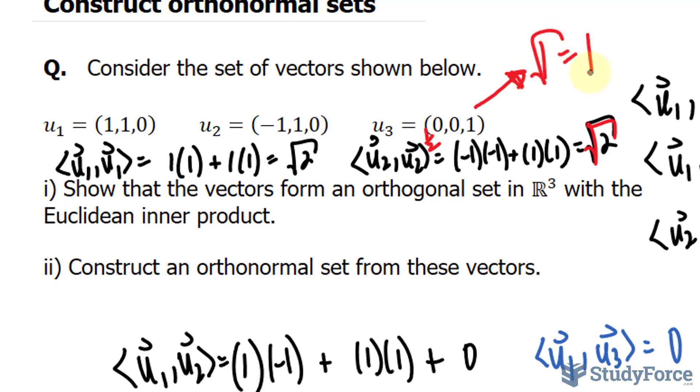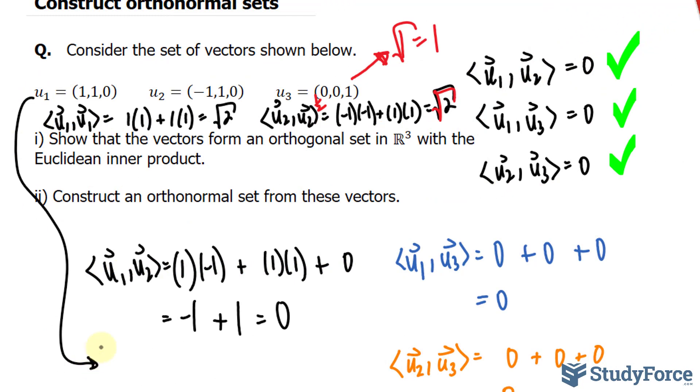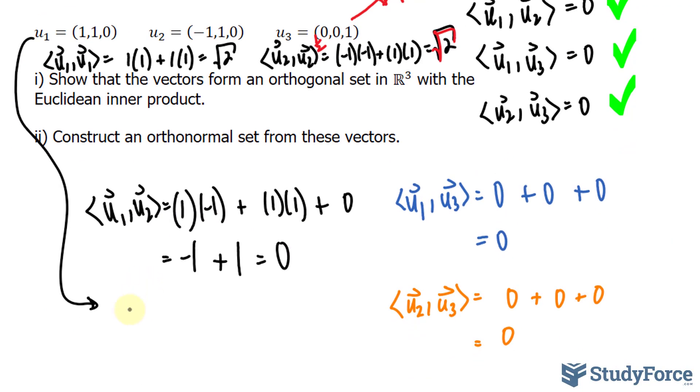Now to construct this orthonormal set, we gather up this information, and we actually find the unit vector for each of these. So let's start with this one. We will take the square root of two, and to find the unit vector of a vector, you take each of its components and divide it by the norm. One over the square root of two, one over the square root of two, and zero over the square root of two, which becomes zero. That's the first of three components within the orthonormal set. Let's call it S. That's the very first component.